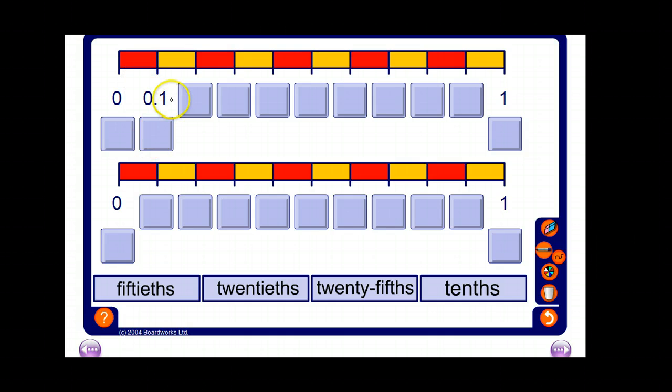So we know that the first one must be 0.1, 0.2, 0.3, 0.4, 0.5, 0.6, 0.7, 0.8, 0.9 and then 1. And then we know that that must be one tenth of the way along. So that one's okay.